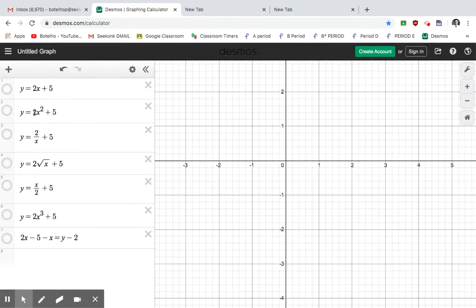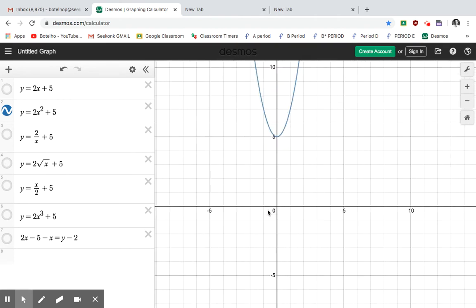There's a curved line there. 2x squared plus 5, curved, non-linear. What happens when I put the x in the denominator? Here you can see another curved line appears.